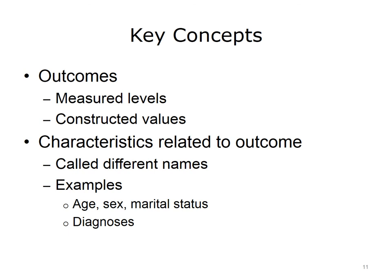The other concept common to both risk adjustment and predictive modeling are characteristics related to the outcome. These can be called factors, predicting variables, or independent variables. Some common examples in healthcare include age, sex, and marital status. Additionally, diagnoses such as heart disease and diabetes represent a rich array of information about a person.